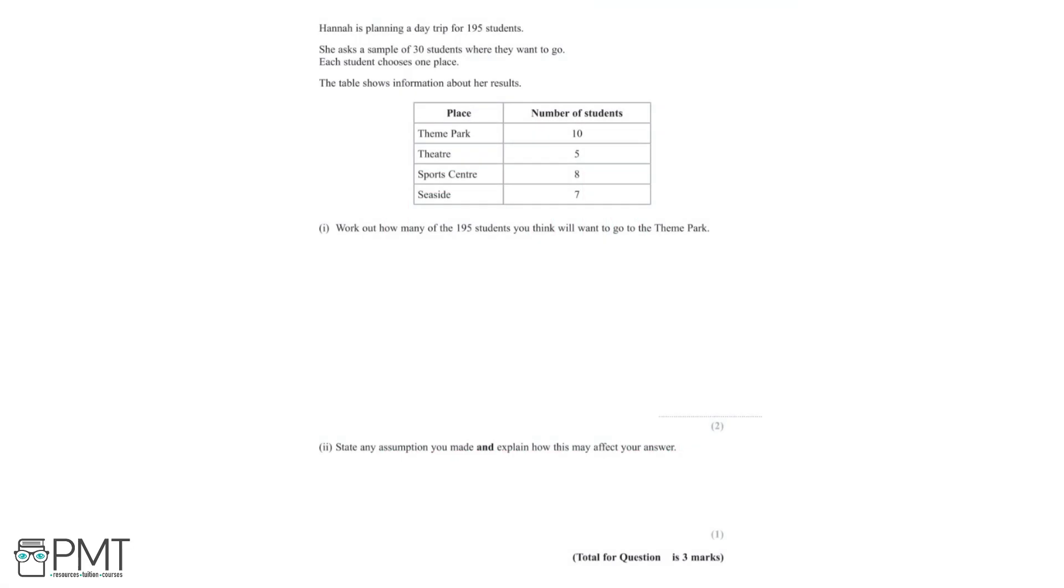In this question, we're told that Hannah is planning a trip for 195 students. She asks a sample of 30 students where they want to go, and each student chooses one place. Now the table below shows information about her results.